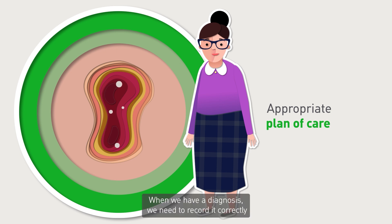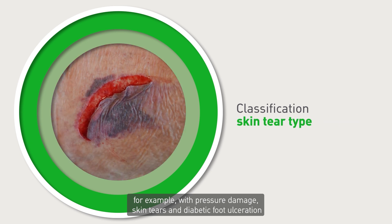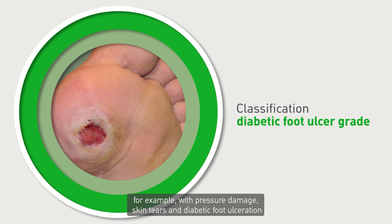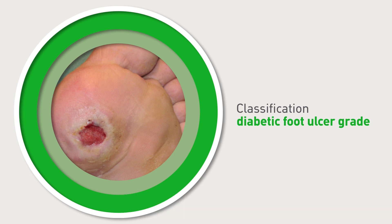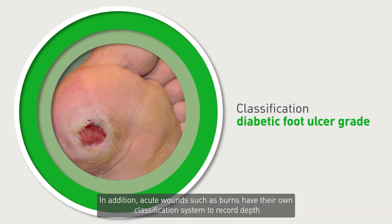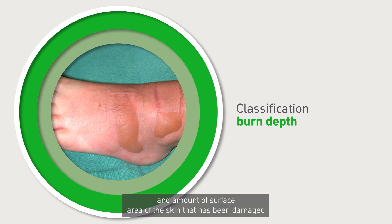When we have a diagnosis, we need to record it correctly. For example, with pressure damage, skin tears and diabetic foot ulceration, we should use the correct categorisation or classification systems. In addition, acute wounds such as burns have their own classification system to record depth and amount of surface area of the skin that has been damaged.